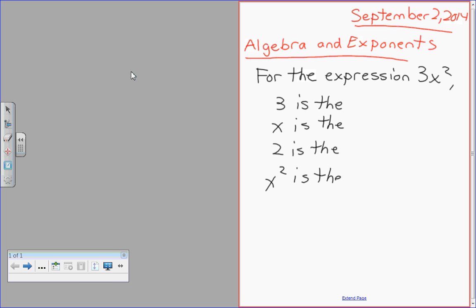It says for the expression 3x squared, 3 means something, x means something, 2 means something, and x squared means something. Do you know what any of those four things mean? They all have an English name to them. 2 is in fact the exponent. Very good.